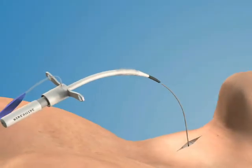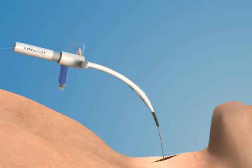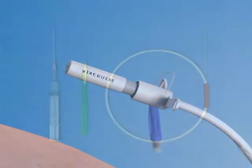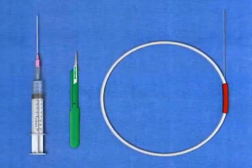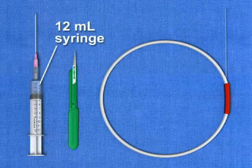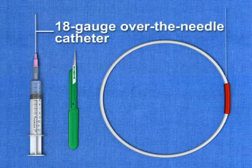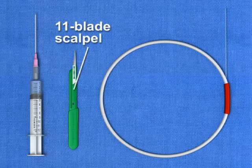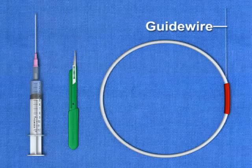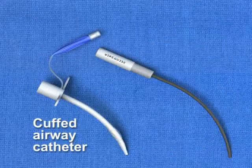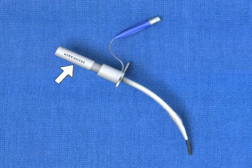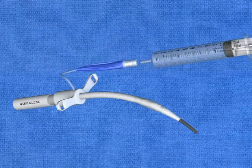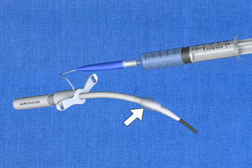The Melker cricothyroidotomy procedure relies on the Seldinger over-the-wire technique to place the airway. The equipment may be found in a commercially available prepackaged kit that includes a 12-milliliter syringe, an 18-gauge over-the-needle catheter, an 11-blade scalpel, a flexible guide wire in a plastic housing, a cuffed airway catheter, and a curved blunt dilator. The dilator must be placed into the airway catheter prior to the procedure. Note that the airway catheter has an inflatable cuff, analogous to those found on endotracheal tubes.